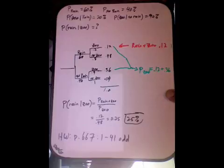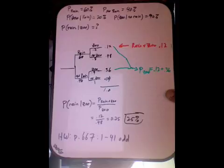So the formula says: probability of rain given zoo equals probability of rain and zoo divided by probability of zoo — just like the last question. Rain and zoo: that's this top entry here, 12%. Probability that I went to the zoo at all is the sum of two different outcomes: rain and zoo, and no rain and zoo — 12% and 36%, so a total of 48%. Dividing, we get a surprising result: 25%.